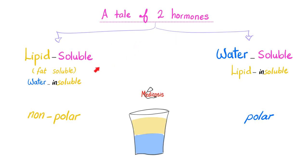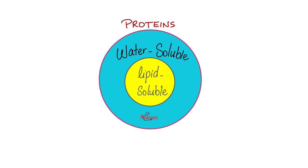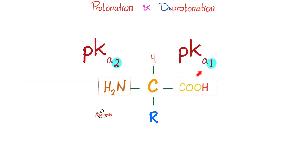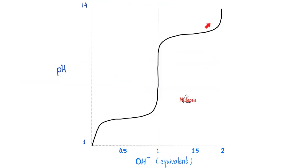In the next video, we'll talk about lipid soluble versus water soluble. I'll tell you why these amino acids are amphoteric. And then we have great stories about the pH and the pKa — what do you do if you have pKa1 and pKa2, and we'll study these crazy titration graphs.